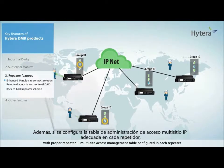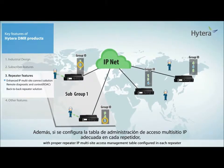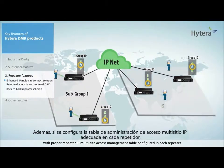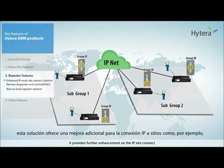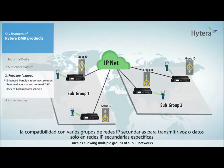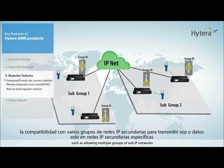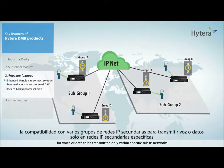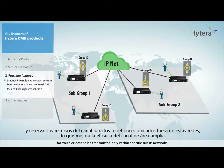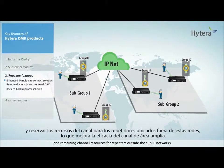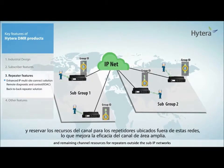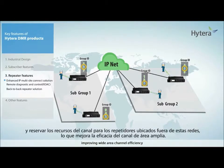With proper repeater IP multi-site access management table configured in each repeater, it provides further enhancement on the IP site connect, such as allowing multiple groups of sub-IP networks for voice or data to be transmitted only within specific sub-IP networks, and remaining channel resources for repeaters outside the sub-IP networks, improving wide area channel efficiency.